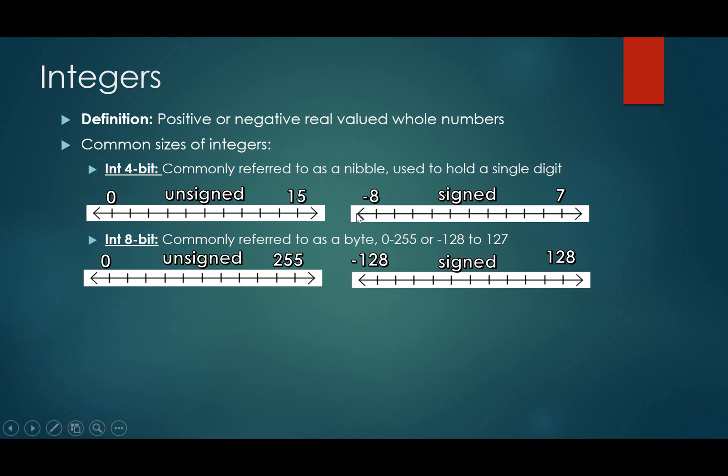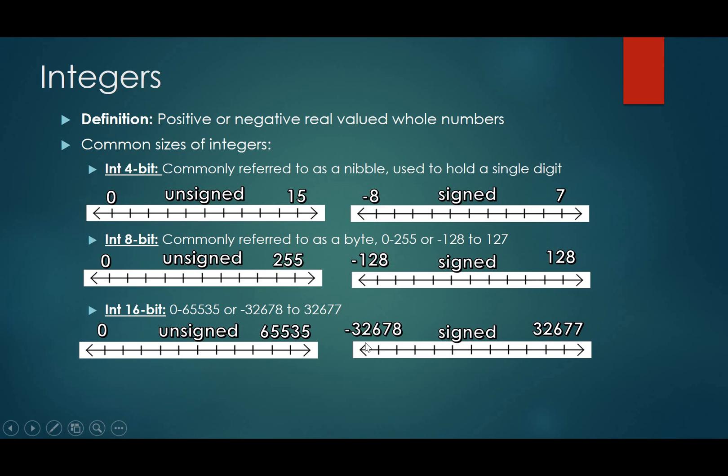And if you're wondering why they're not evenly distributed, that is because we have to include 0. 0 is a number, and it is a very important number. It's commonly referred to as the computer's second favorite number after 1, and that's a joke because it's binary. Anyways, moving on to the next size, it's a 16-bit integer. Now, as you can tell, we're getting bigger numbers here. So unsigned, we can go up to 65,535, and then signed is negative 32,678 to 32,677. Now, that's with 16 ones and zeros, 16 bits. We can store these numbers.